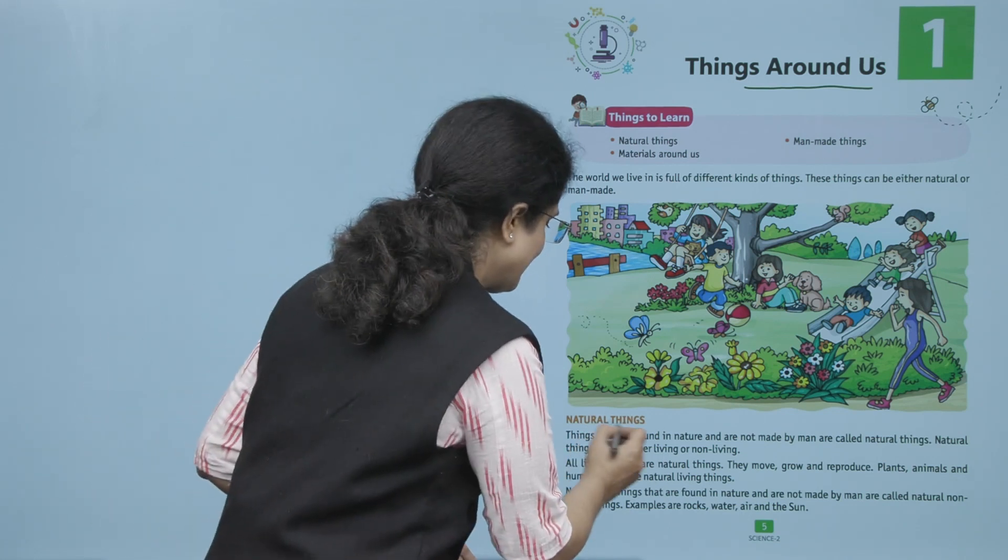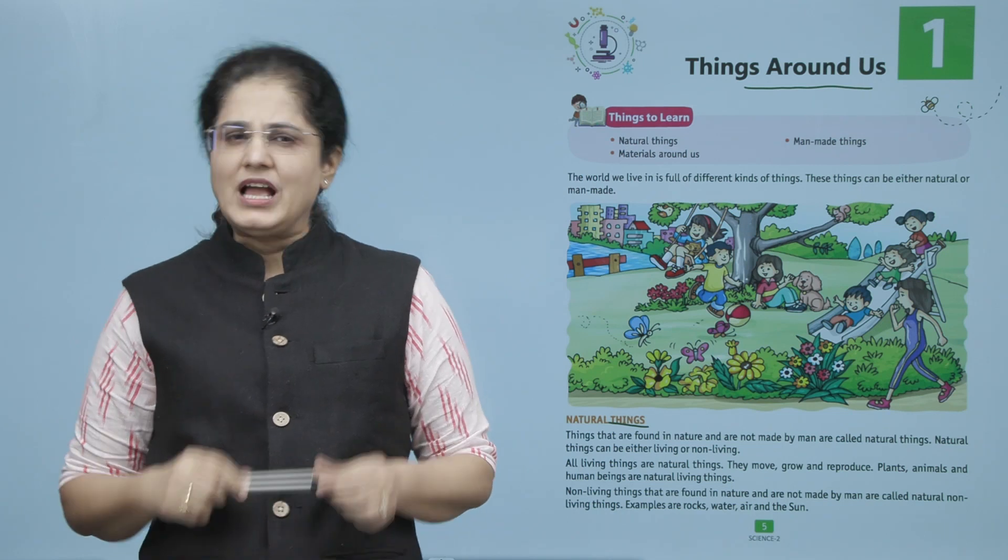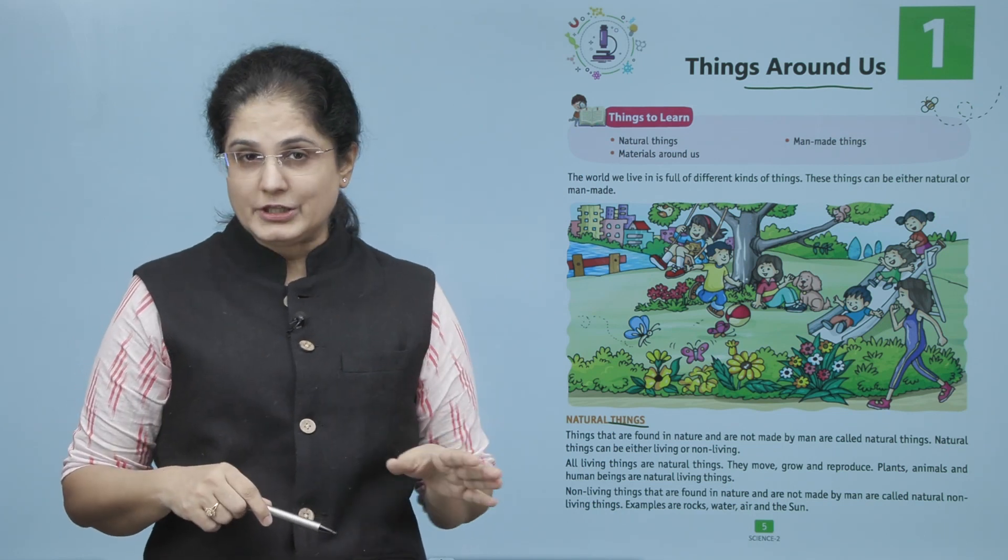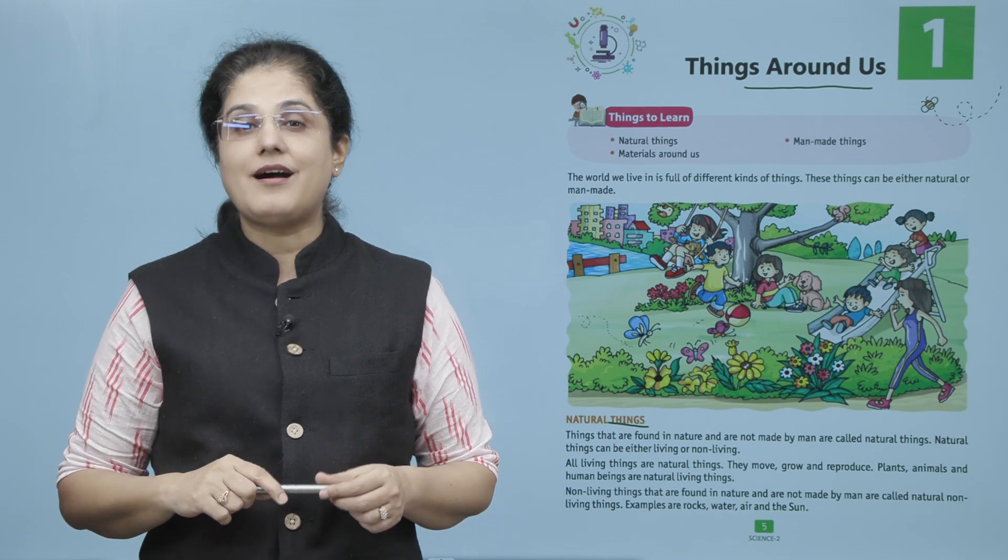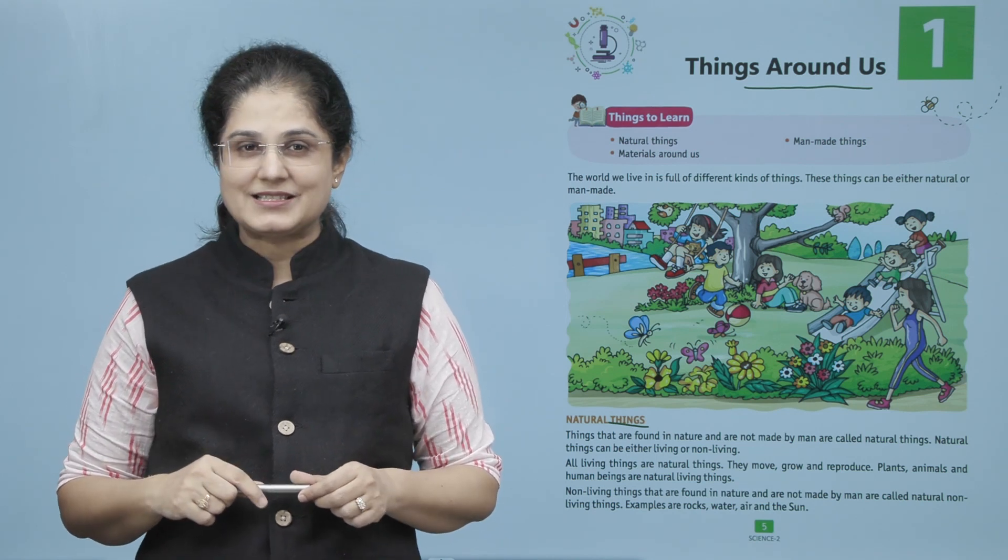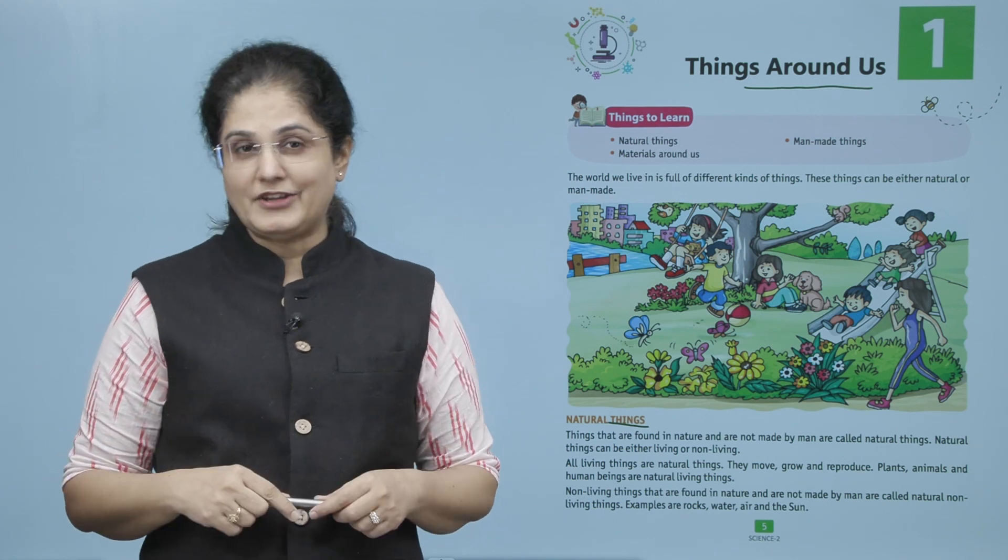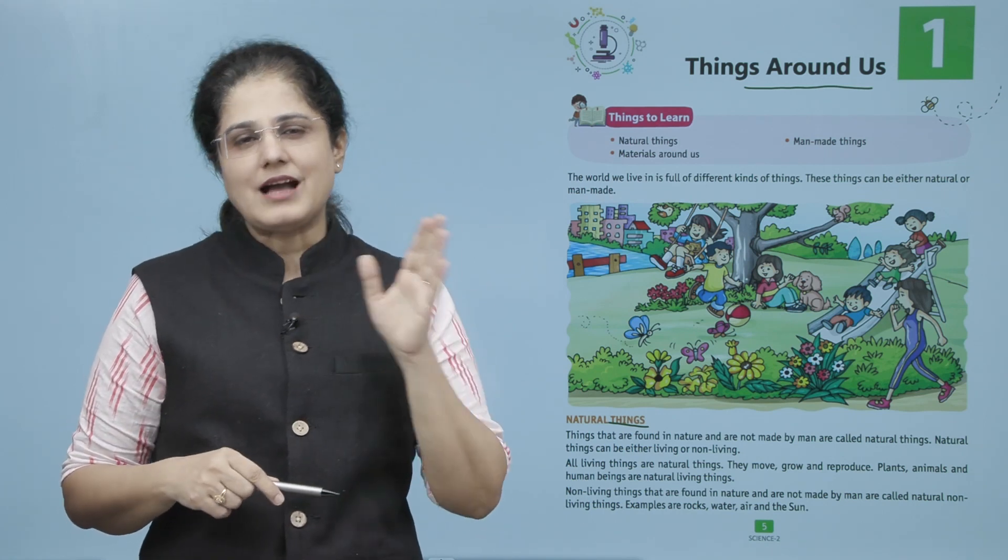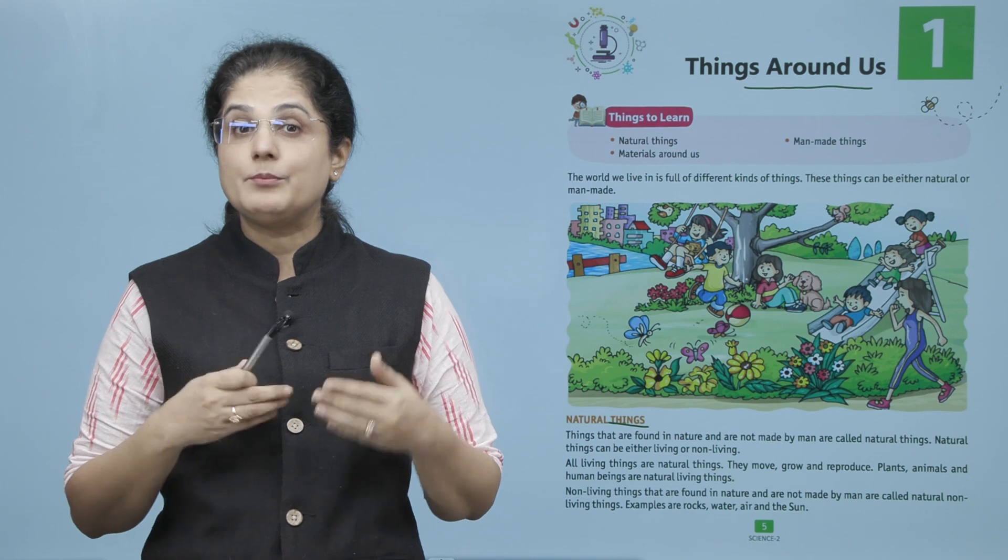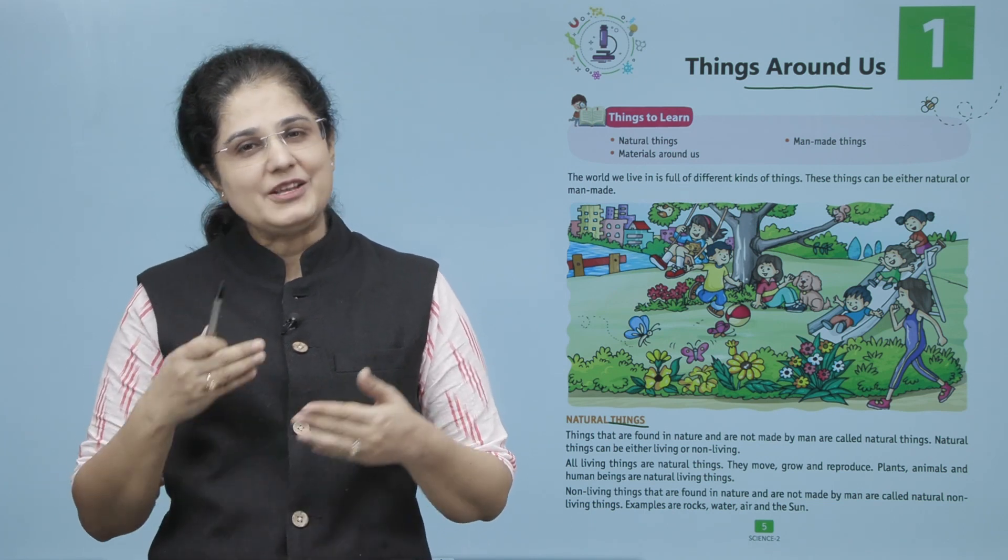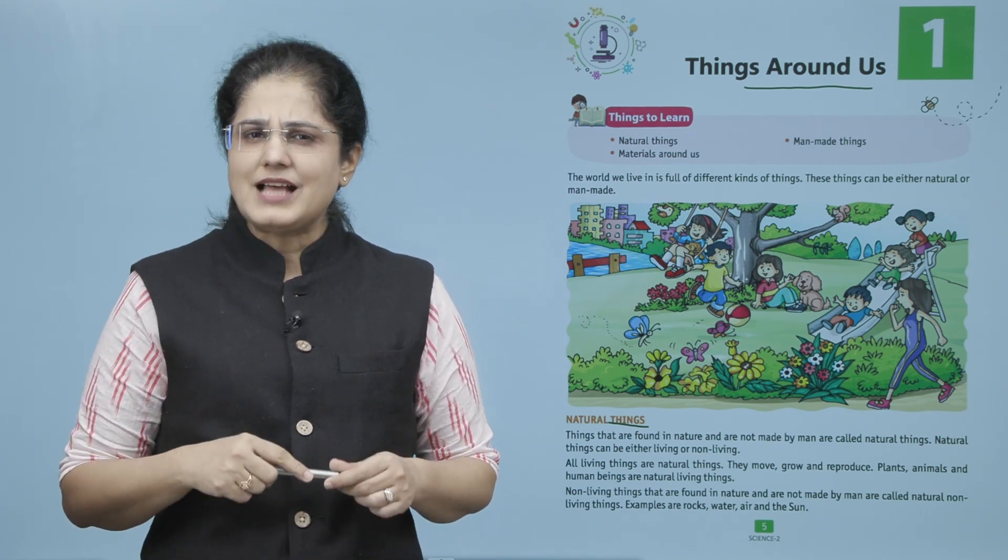Things that are found in nature and are not made by man are called natural things. Natural things can be either living or non-living. All living things are natural things. They move, grow, and reproduce. Plants, animals, and human beings are natural living things.